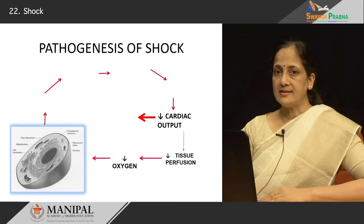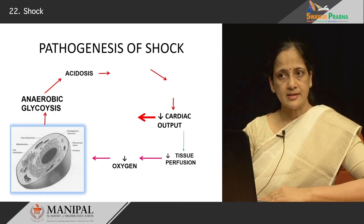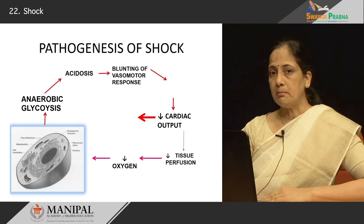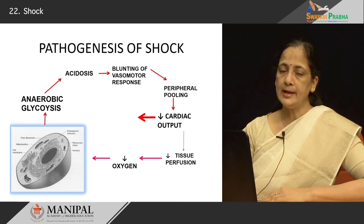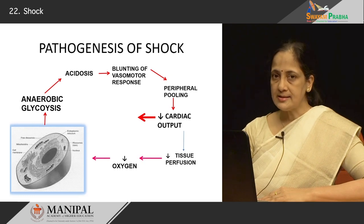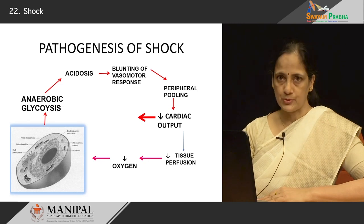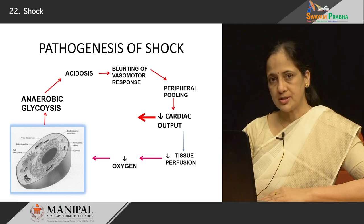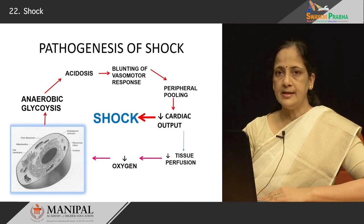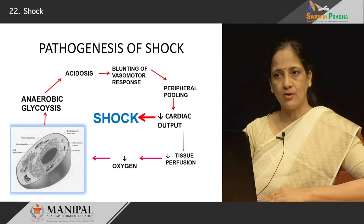There is another factor acting in the pathogenesis of shock. Whenever anaerobic glycolysis occurs and acidosis results, there is a blunting of vasomotor responses. This results in blood pooling in the peripheral circulation, which in turn decreases venous return to the heart and reduces cardiac output. That again causes decreased tissue perfusion and decreased oxygen supply to the cells. These various mechanisms come together in shock, ultimately resulting in multiple organ failure and death of the patient.